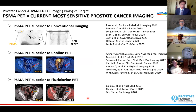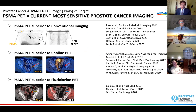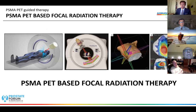PSMA PET is now the most sensitive prostate cancer imaging modality we have. It has been shown to be superior to conventional imaging — CT and bone scan — superior to choline PET, and now superior to fluciclovine PET, also known as Axumin. With a more sensitive imaging tool, we see the disease earlier and better, enabling better targeted therapy such as focal radiation therapy in patients with oligometastatic disease.